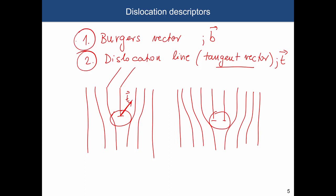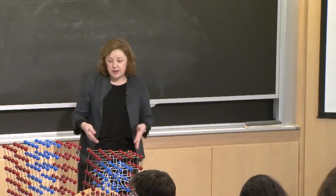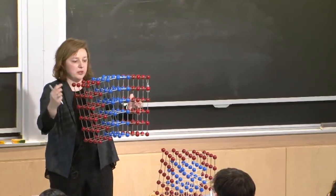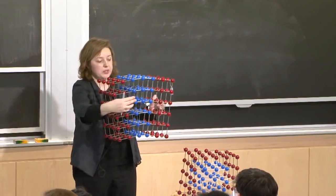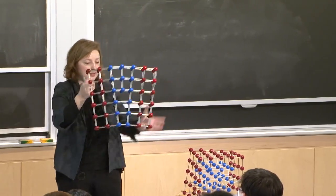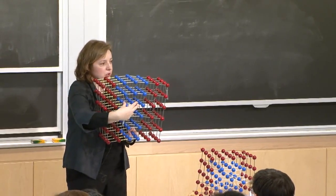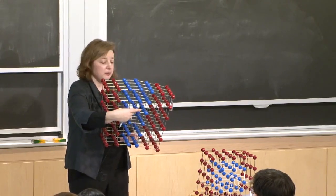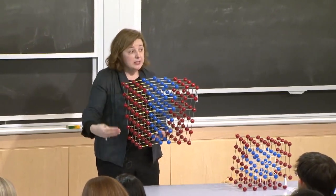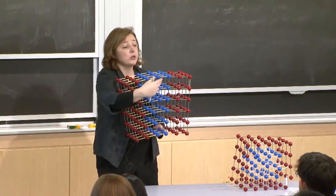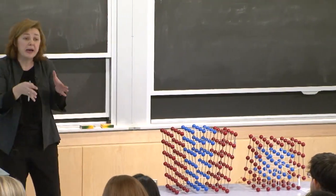The Burgers vector b tells you what is the magnitude of the deformation. In the case of an edge dislocation, there is one additional plane inside the crystal that deforms the material — a plane that in a perfect crystal doesn't exist. It ends up in a certain region of the crystal, which is the dislocation line. The strength of this deformation is called the Burgers vector. If you have two extra planes, the Burgers vector simply tells you that the magnitude of that deformation is larger than when you have only one additional plane.